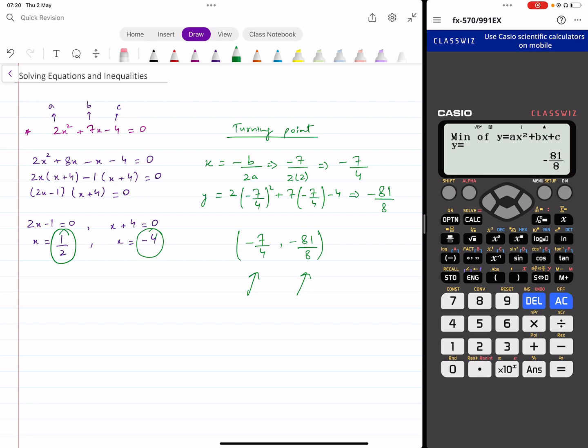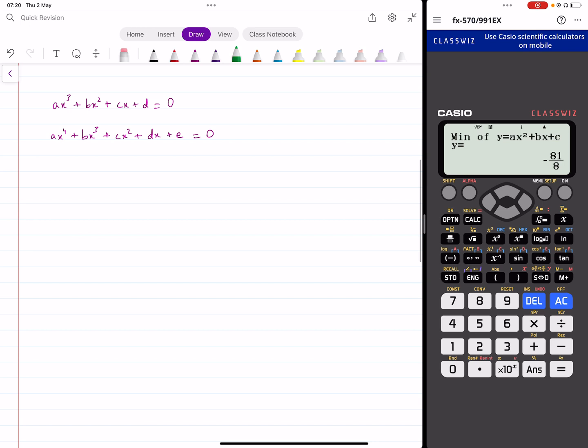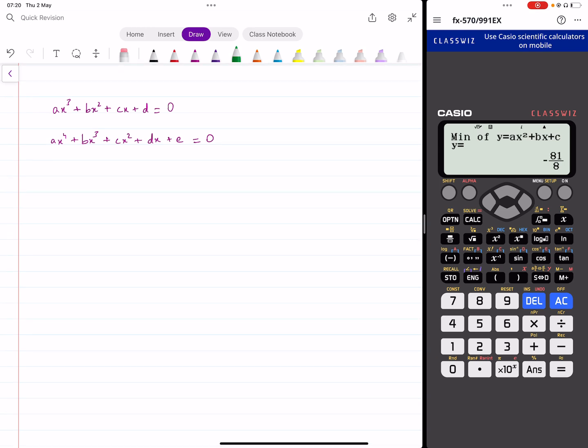Now, working is important. This is only for verification purposes. All right? Now, you can also solve cubic equations and quartic equations using the same function here. So when you go to equation polynomial, you've got options for degree 3 and degree 4 as well. You'll be using them in paper 3 later on in the polynomials topic to, again, verify your answers.